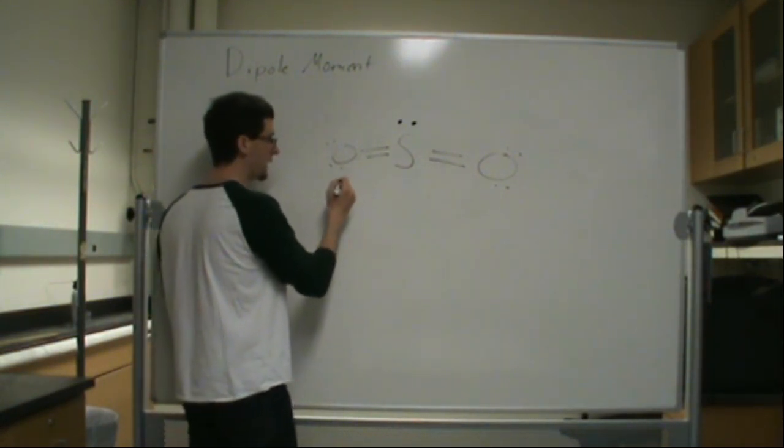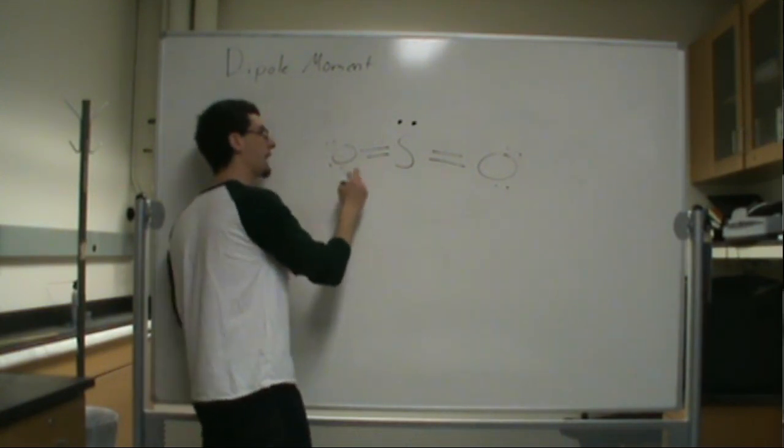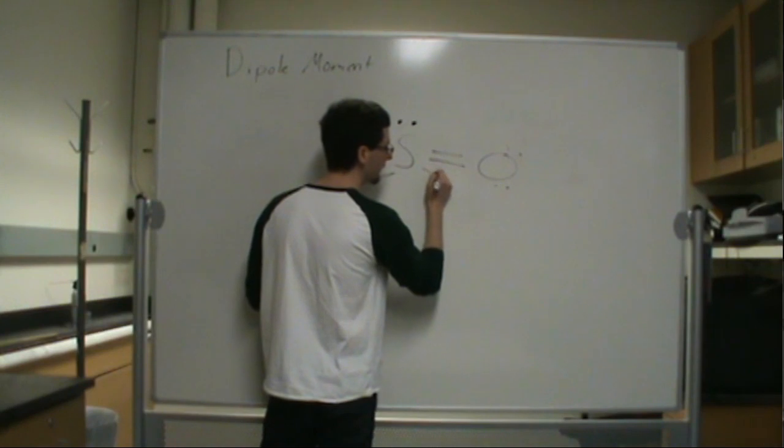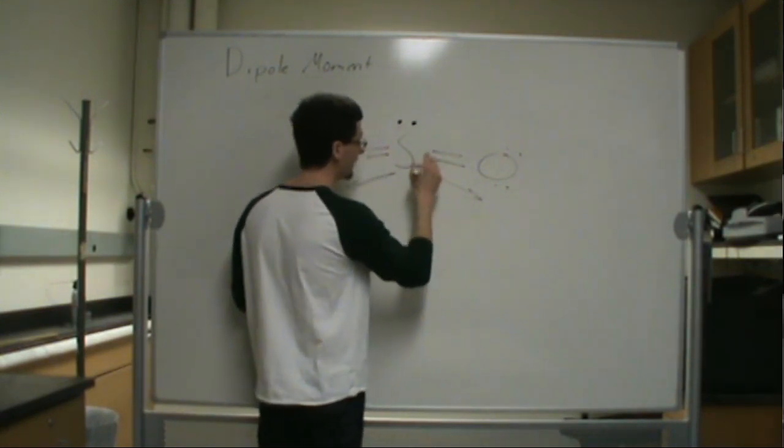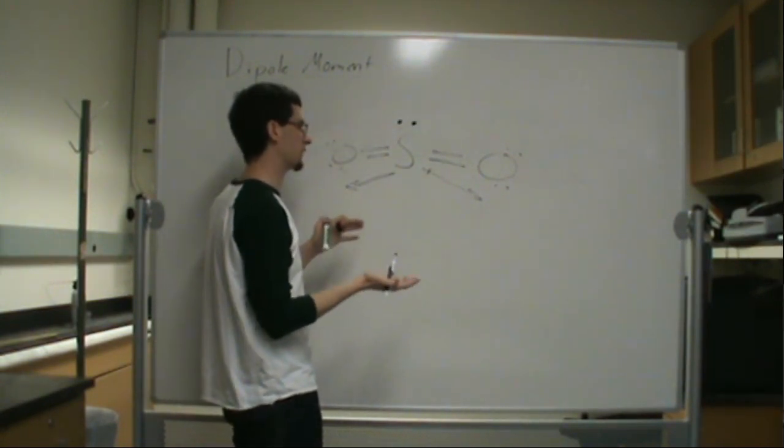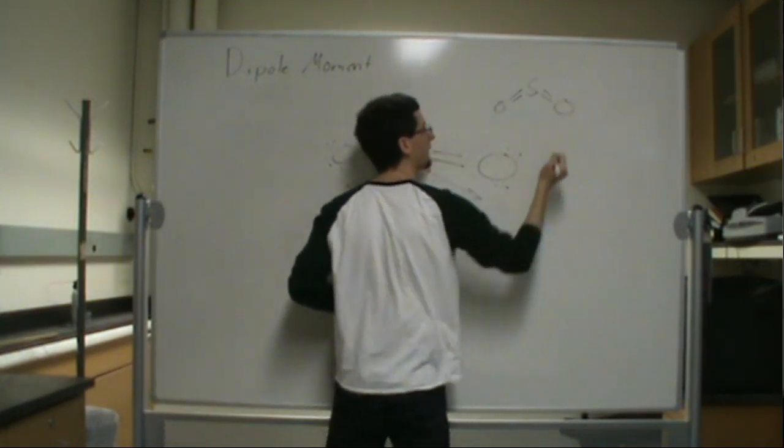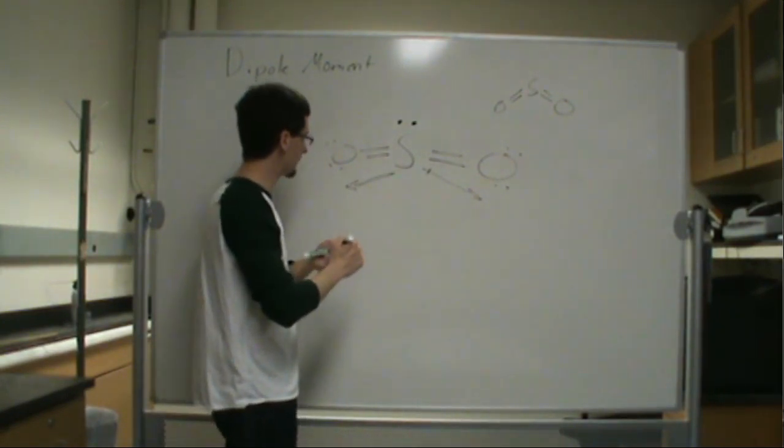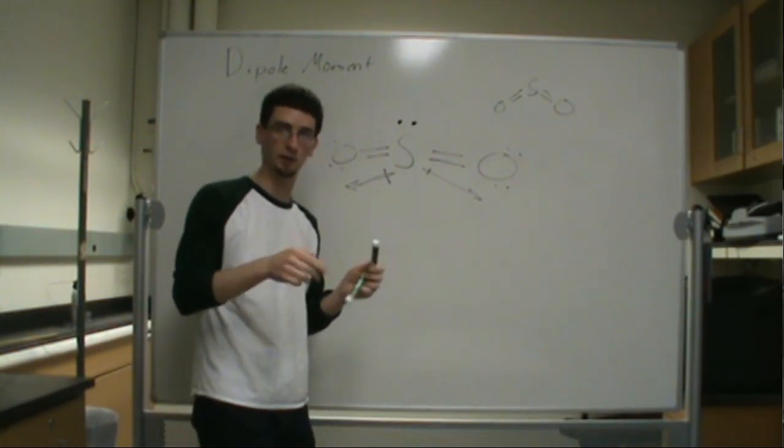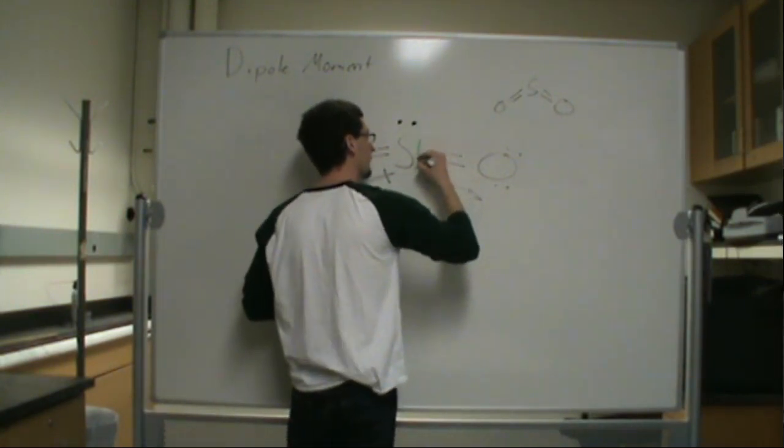So, what we'll have is a dipole moment pointing from the sulfur to the oxygen. Sulfur is less electronegative than oxygen. Pointing that way. And this one's pointing that way. And since there's this lone pair up here, it's actually bent. So, the way I've drawn it isn't pictorially correct. It should be more something along the lines of that. Since these vectors are not equal and opposable, well, they are equal, but they're not opposing one another, there's going to be a dipole moment, a net dipole moment, pointing this way.